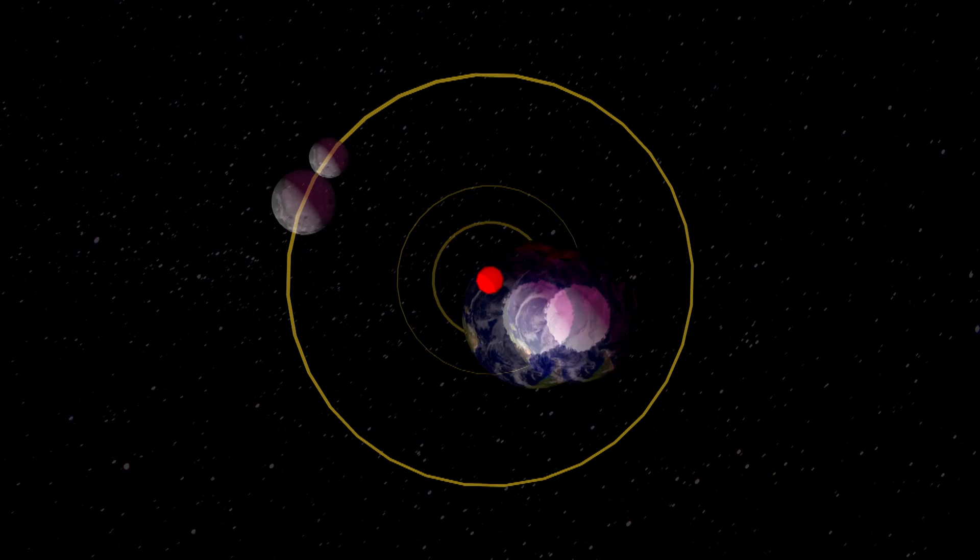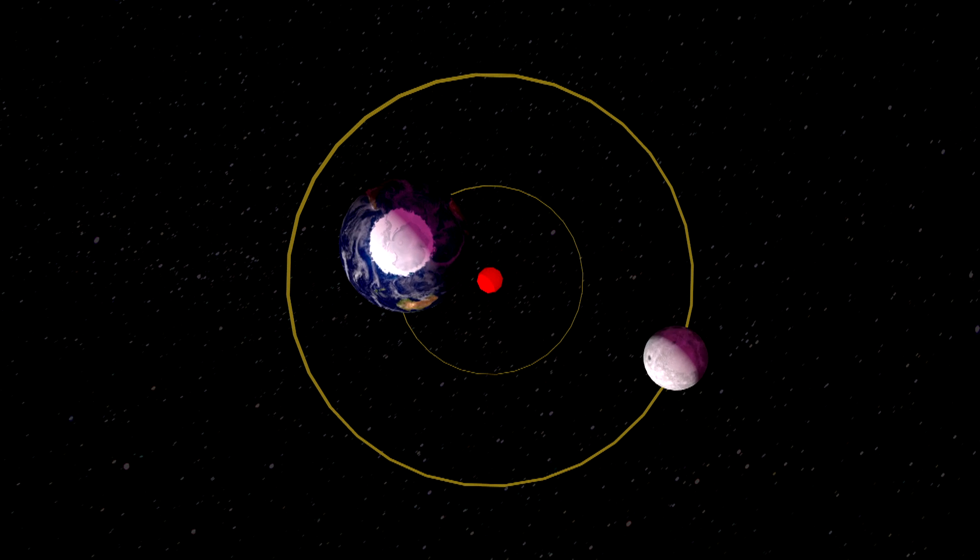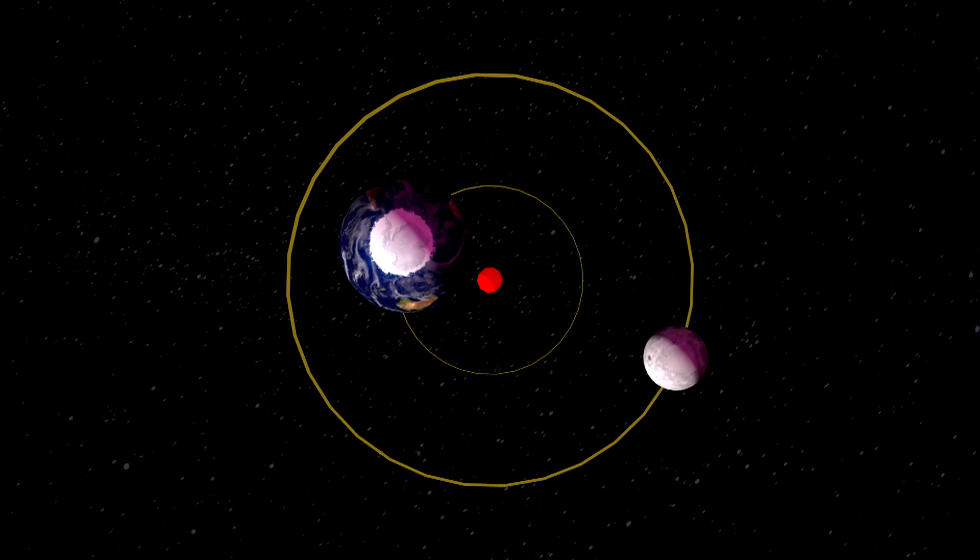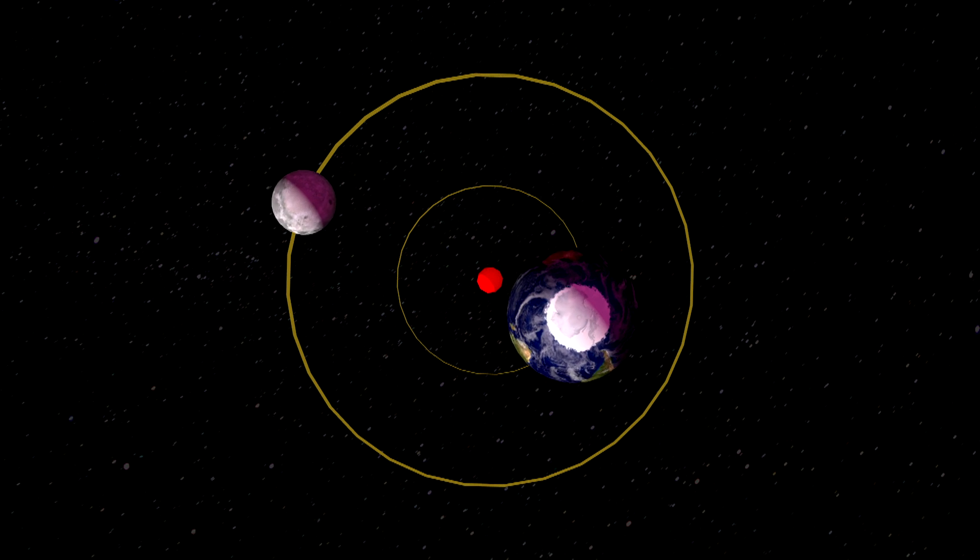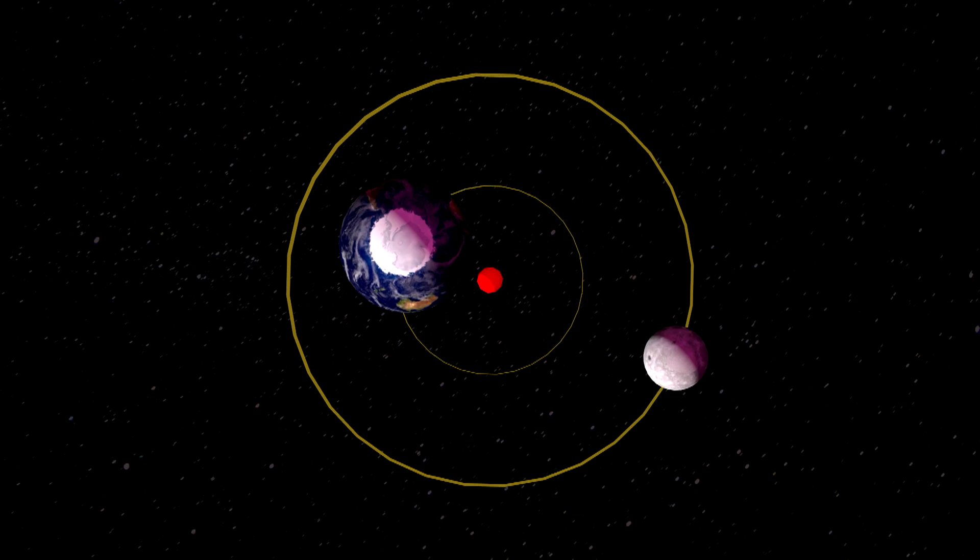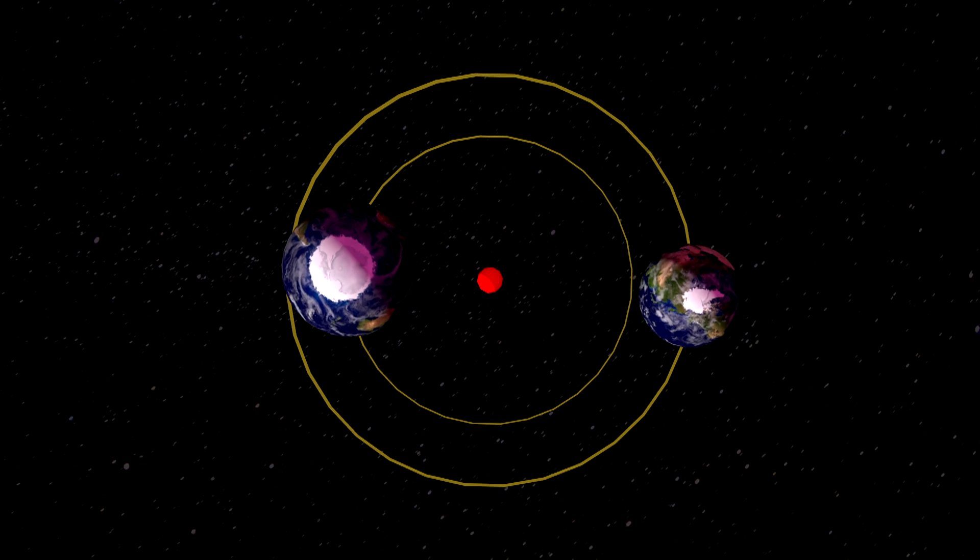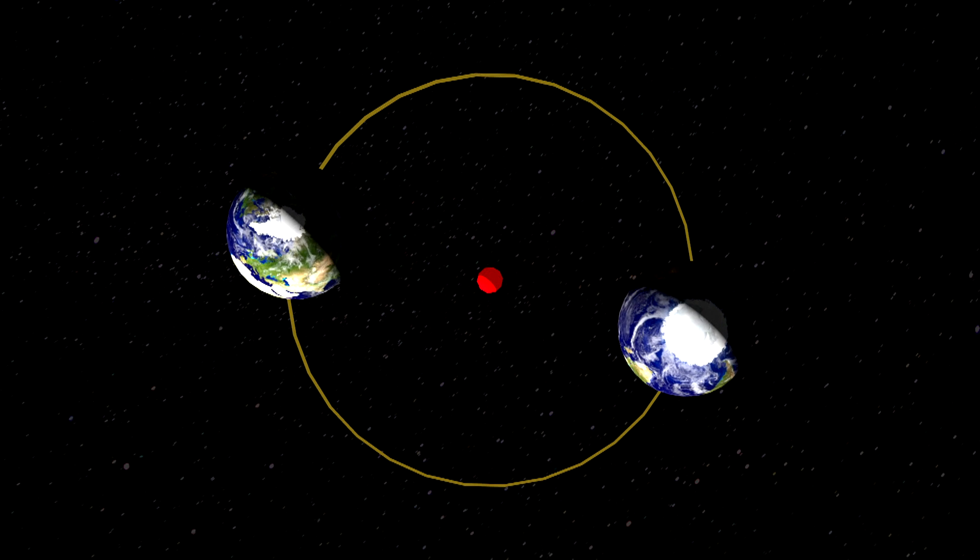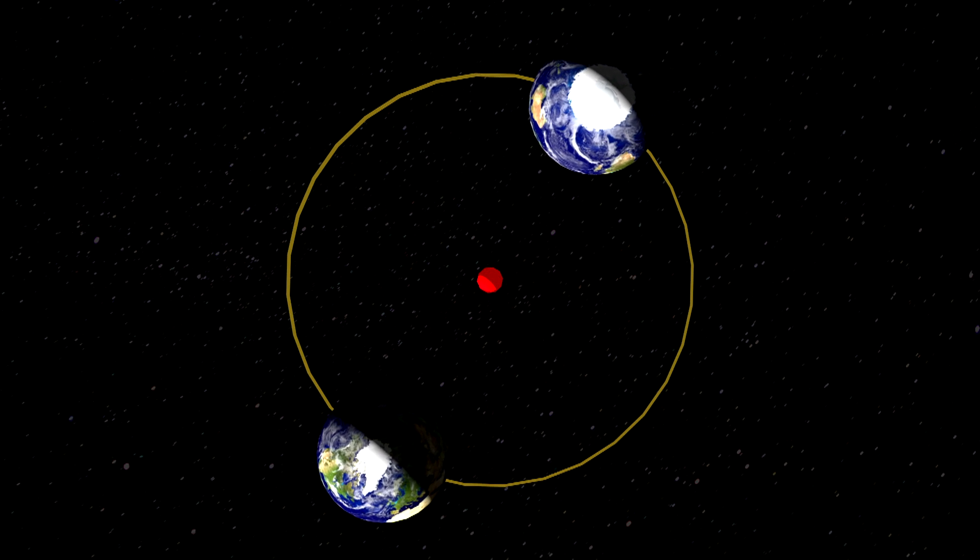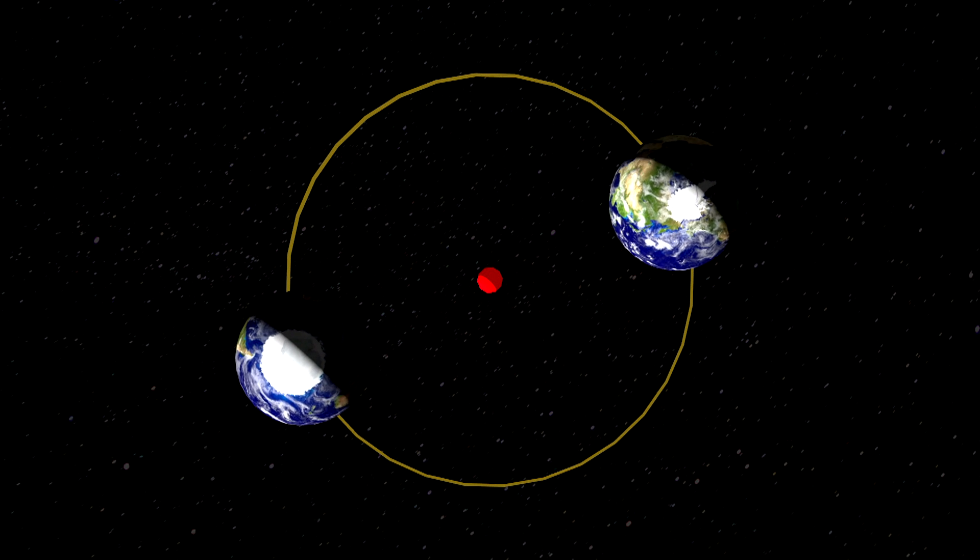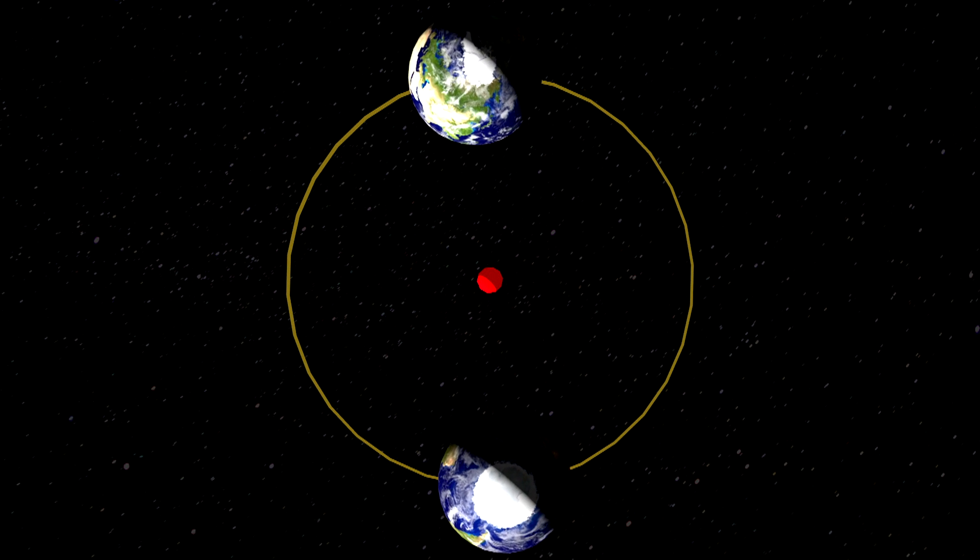As the planets get closer and closer in mass, if you're looking at them from above the barycenter, they increasingly stop looking like one is orbiting the other and more and more look like both are orbiting the barycenter, until at equal mass they seem to both orbit on the same circle 180 degrees apart. And if they are both tidally locked, then the same face of each will always point to the other.